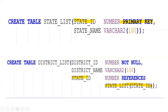In a similar fashion, I am creating one more table called district_list, which has three columns: district_id, district_name, and state_id. The state_list is the parent table and district_list is the child table. The relationship is established using a FOREIGN KEY: state_id references state_list(state_id). This is the parent-child relationship established using the state_id column.